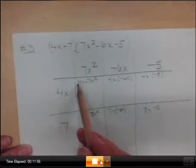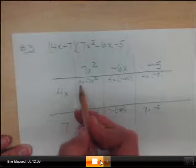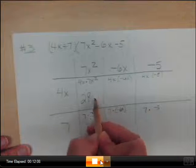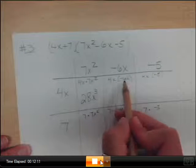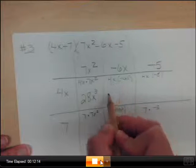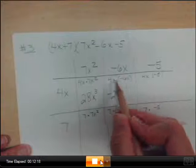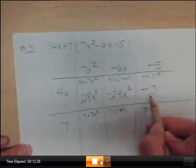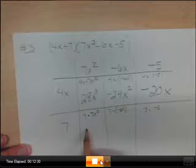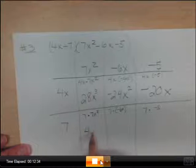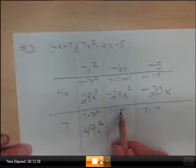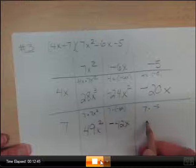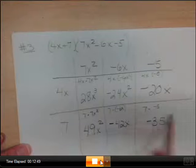Now, let's go ahead and figure out what each box is. So, 4x times 7x² gives you what? 4 times 7? 28. How many x's? 3. 4 times negative 6? Negative 24. How many x's? 2. This box? Positive or negative? Negative 20. How many x's? 1. What's going to go here? 7 times 7? 49. How many x's? 2. 7 times negative 6x? 42. Close. Negative 42x. And here? Negative 35.